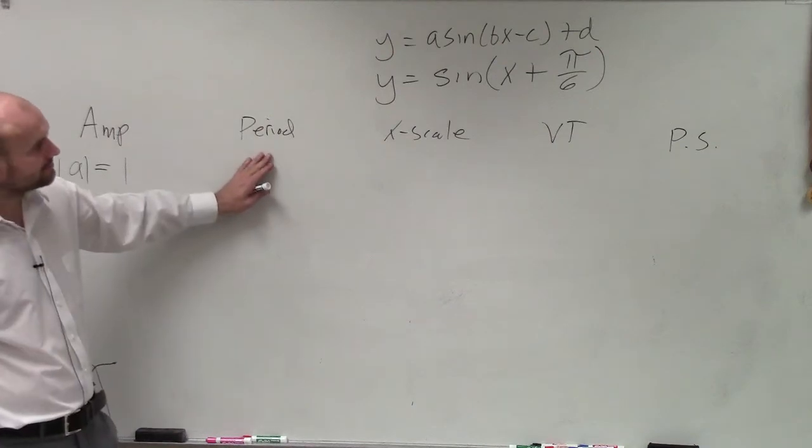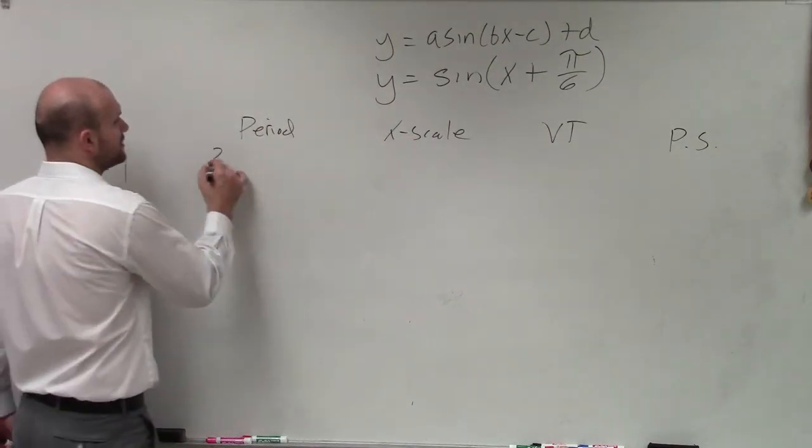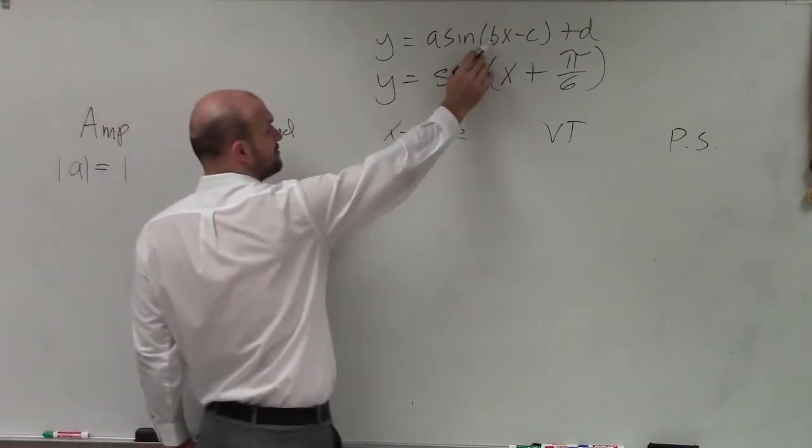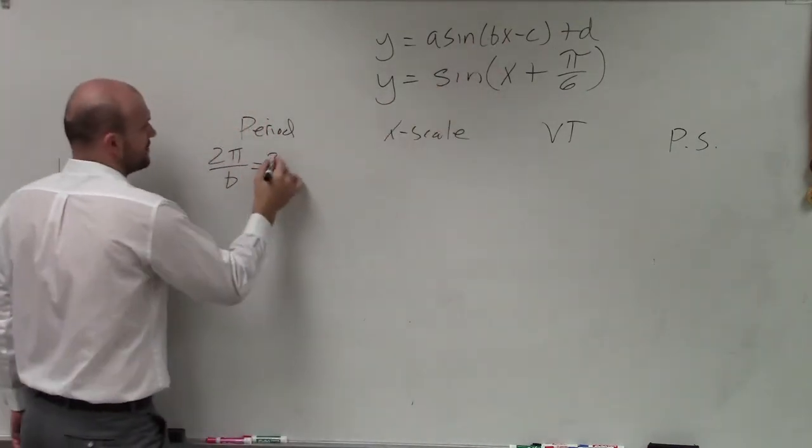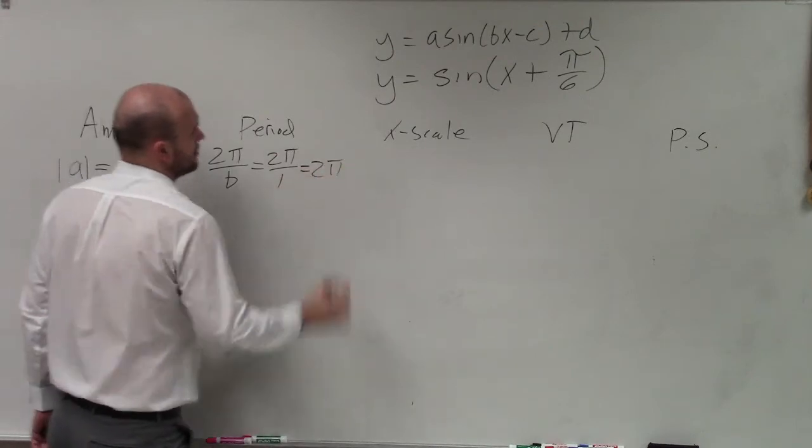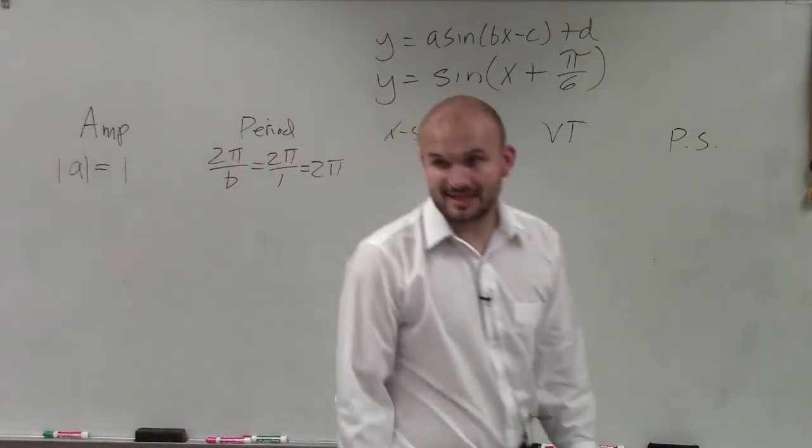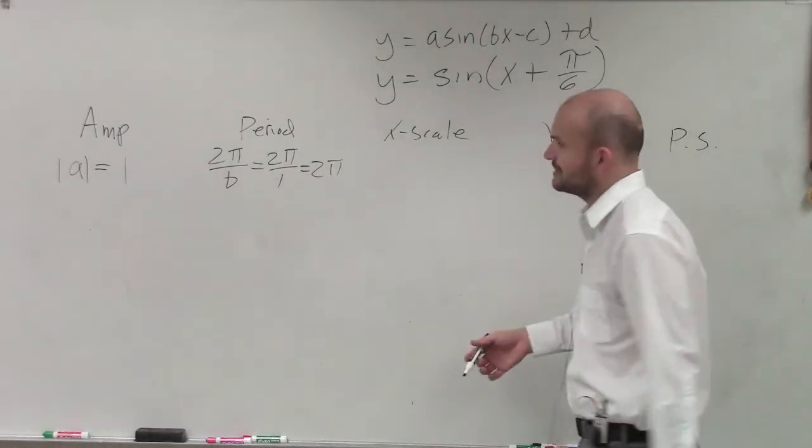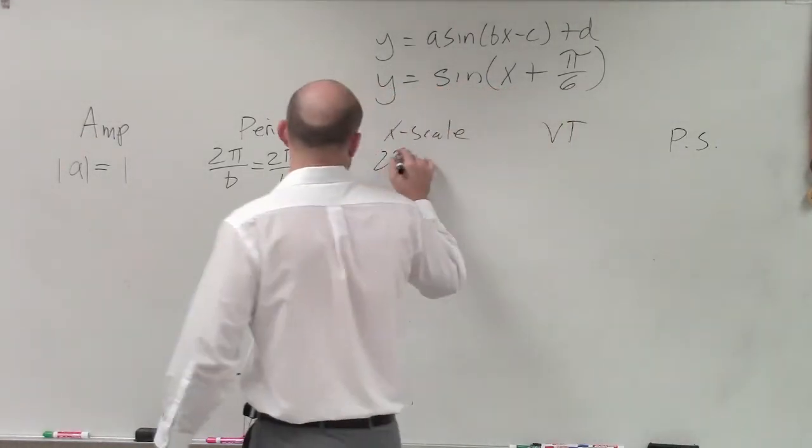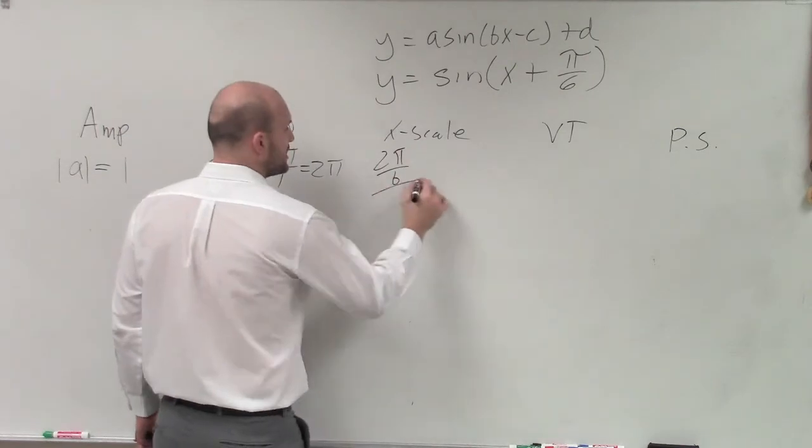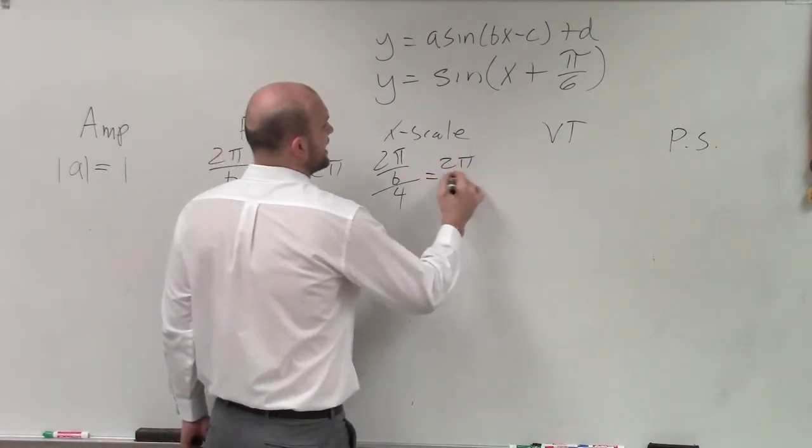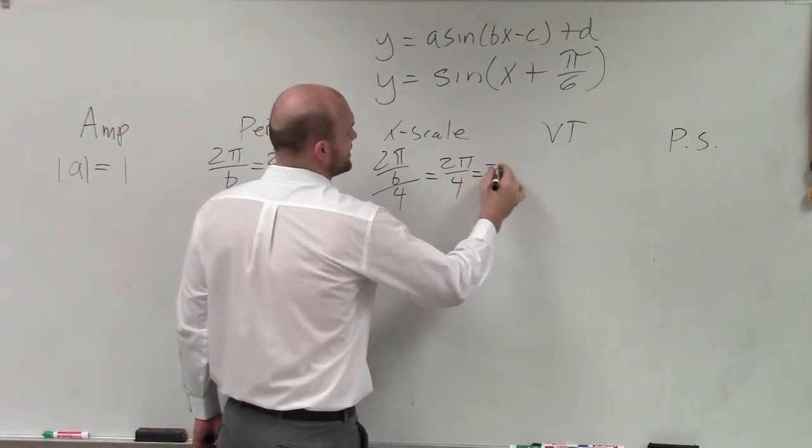Next, I looked at the period. Period, remember, is 2 pi divided by b. Well, b is what's being multiplied by my x, which in this case is 1. So that's 2 pi. The next thing I do is determine the x scale. So I look at my x scale. And remember, x scale is 2 pi over b, which is your period, divided by 4. Well, 2 pi over b was just 2 pi divided by 4 is going to be pi halves.